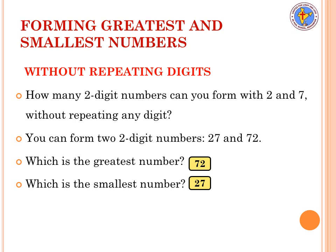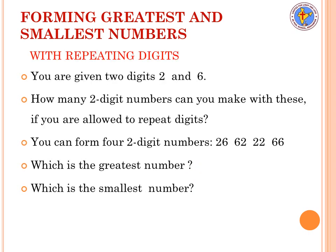Now we will see forming numbers with repeating digits allowed. Two digits given: 2 and 6. You can make four numbers: 26, 62, 22, and 66. Here 22 means you repeated 2 and 2, and 66 means you repeated 6 and 6. Out of these four numbers, the greatest number is 66 and the smallest number is 22.